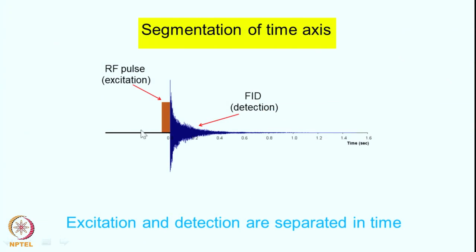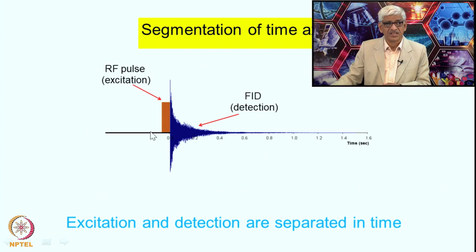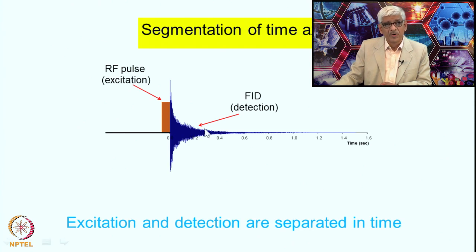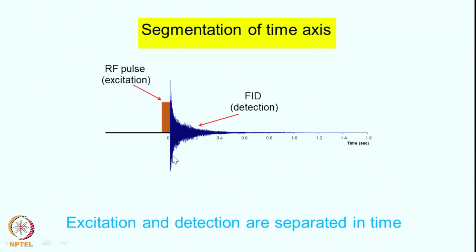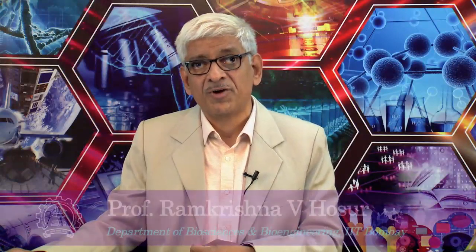There is one other important consequence of FT-NMR that is often not discussed but is perhaps the most important. By applying an RF pulse for a short time tau (of the order of microseconds) and then collecting the FID when there is no RF, excitation and detection are separated along the time axis. This segmentation of the time axis — where excitation and detection are separated in time — has important implications for multidimensional NMR spectroscopy and various pulse techniques developed subsequently.